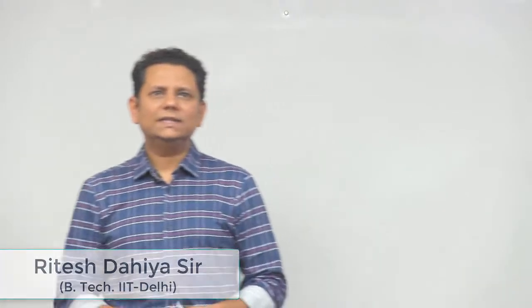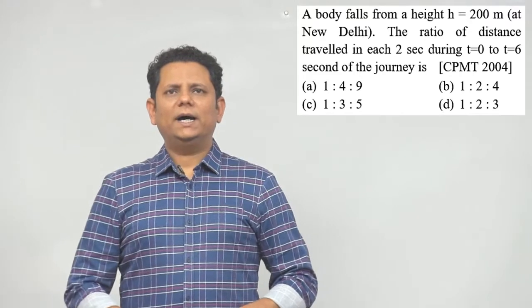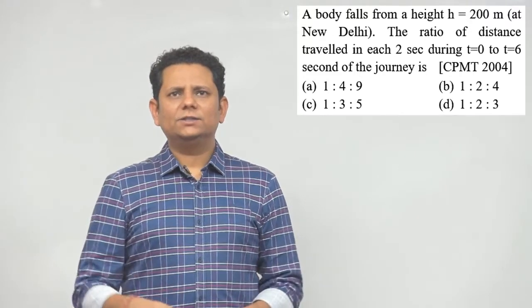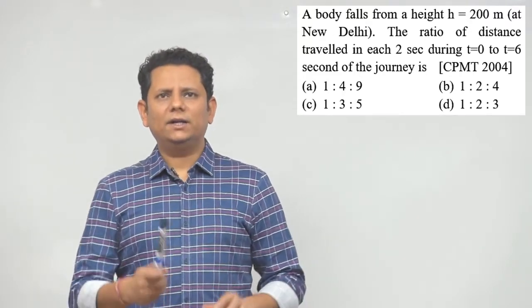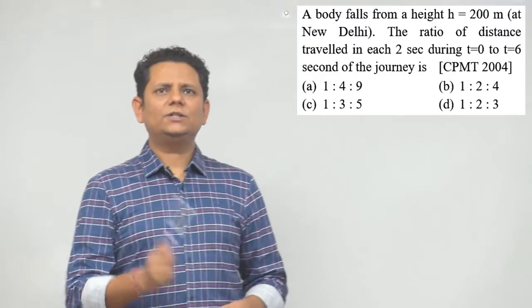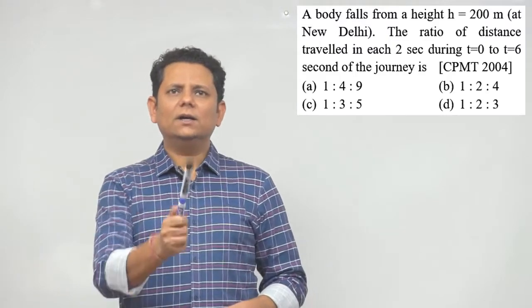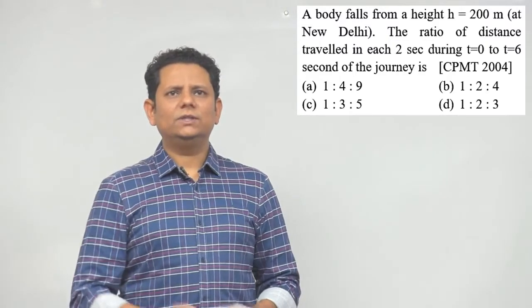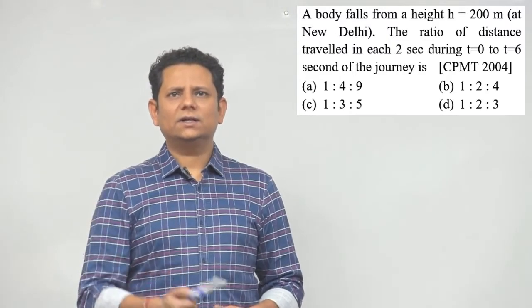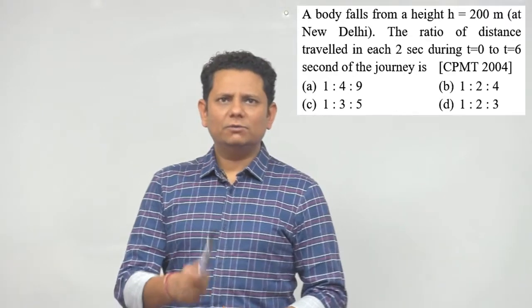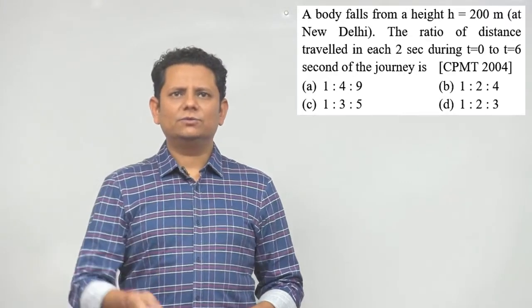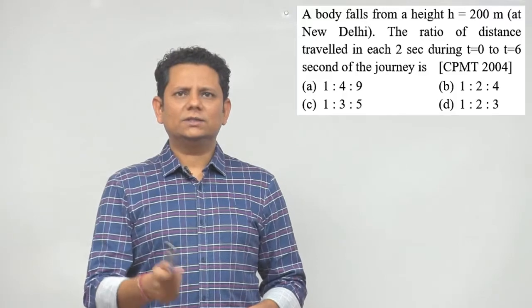Question 24: A body falls from height h = 200 meters at New Delhi. The ratio of distance traveled in each 2 seconds — during t = 0 to 2, t = 2 to 4, and t = 4 to 6 seconds of the journey — will be: (A) 1:4:9, (B) 1:2:4, (C) 1:3:5?